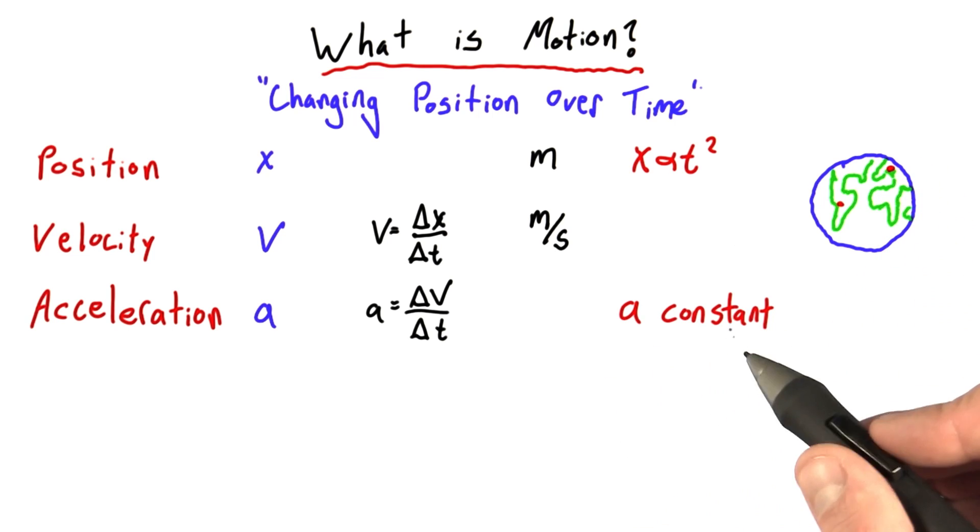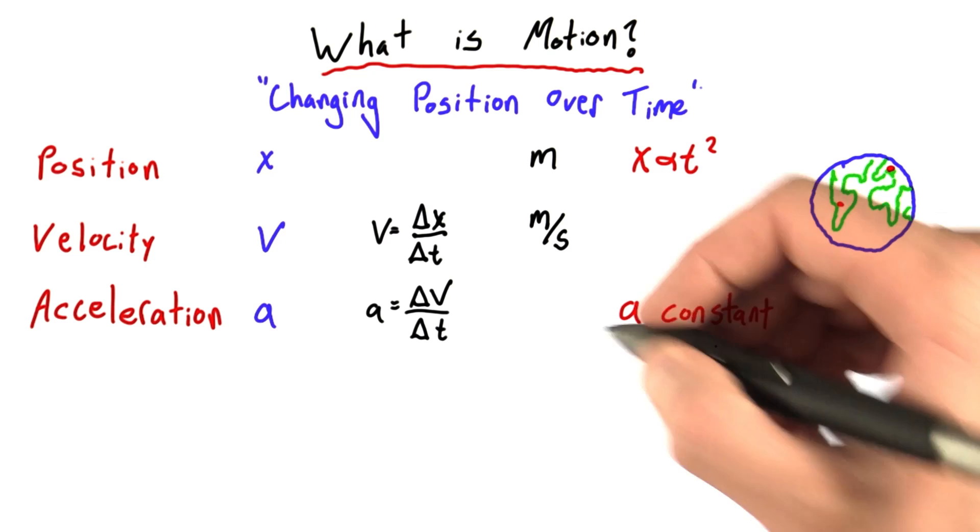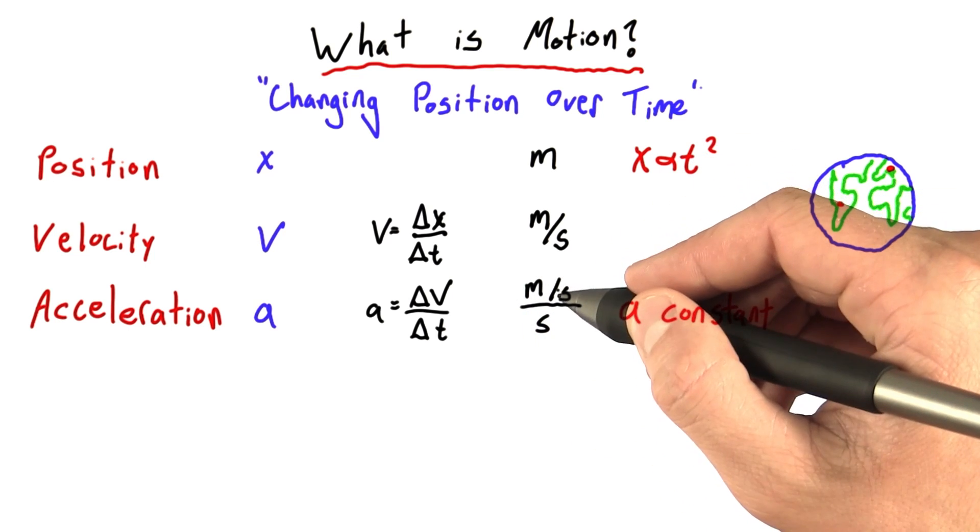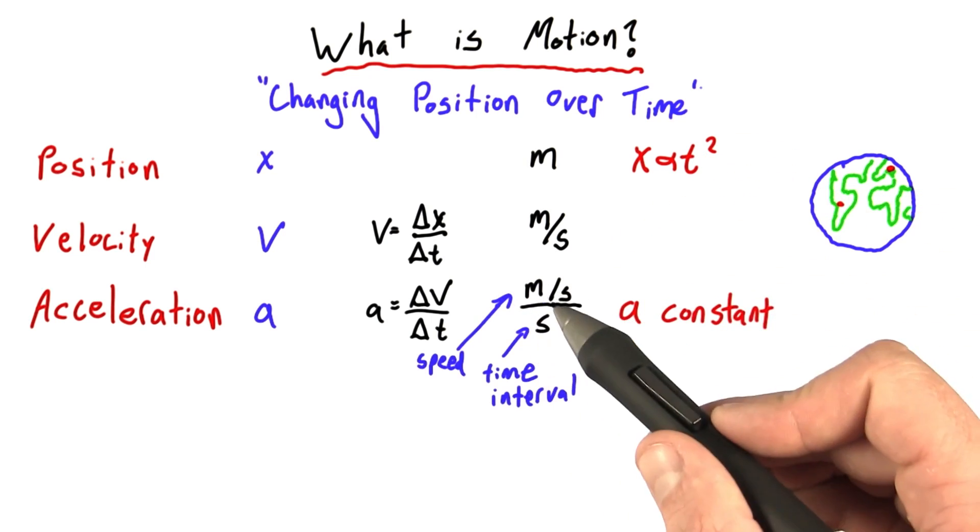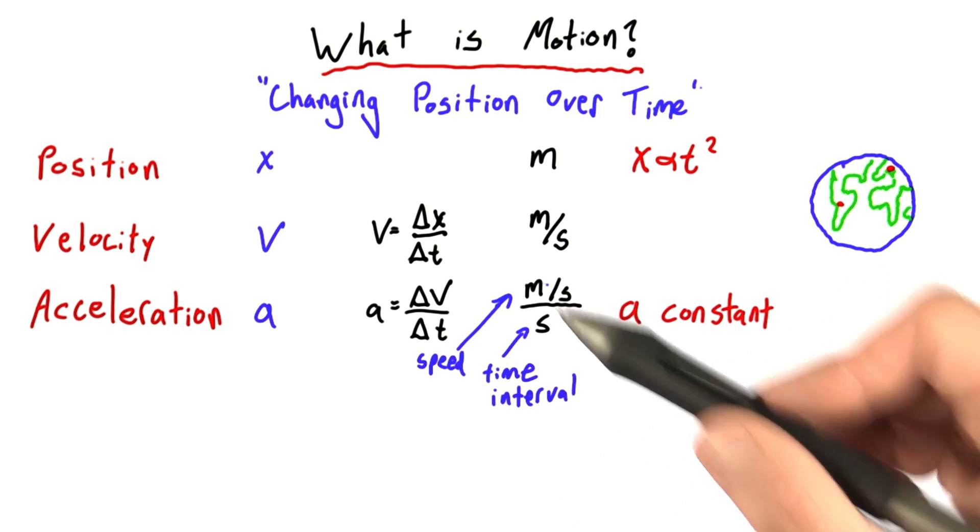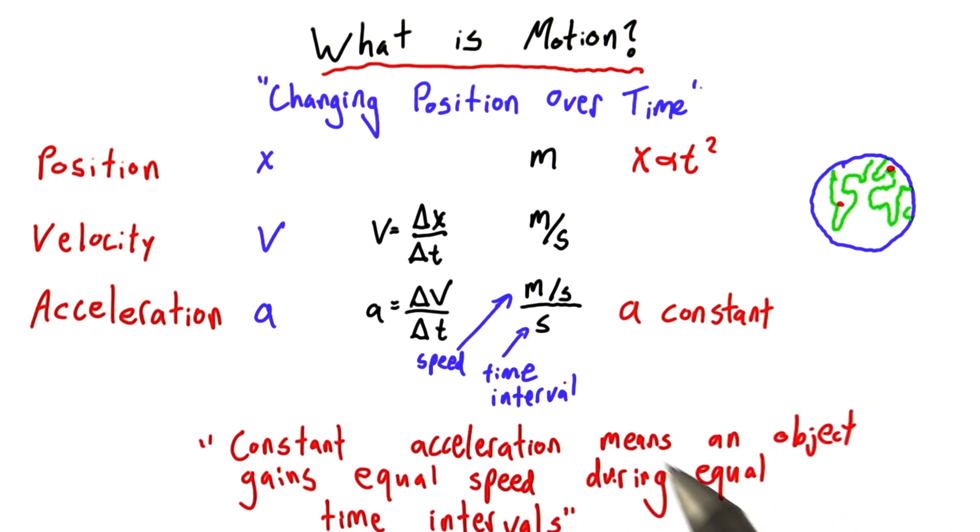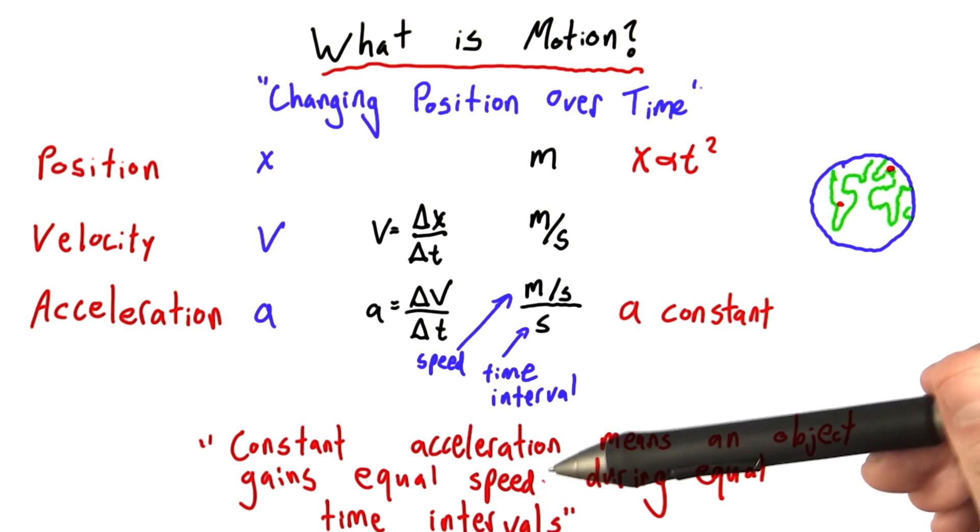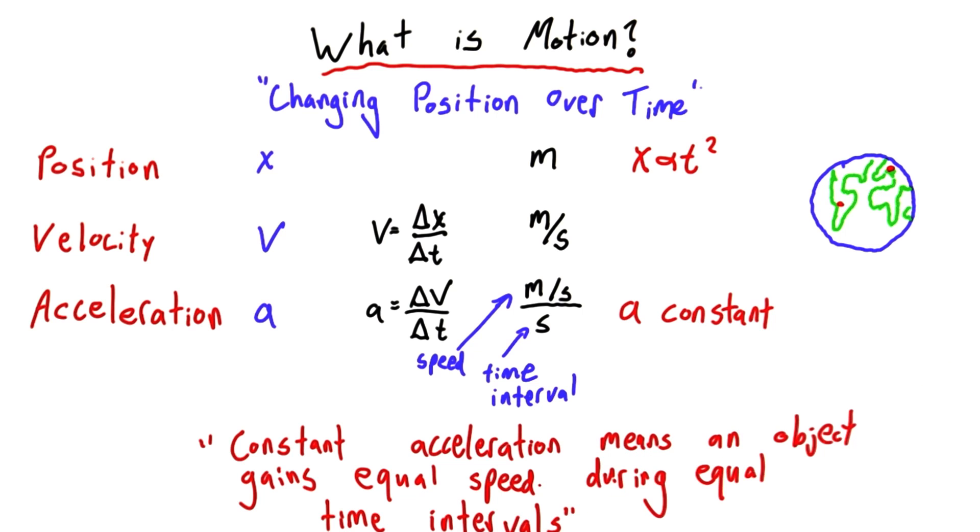Now to better understand this idea, let's talk about the units of acceleration a little bit more. Well the units are meters per second per second. So notice that these units include both a time interval, that's a second, and a speed, meters per second. This sort of hints at the definition for constant acceleration, which just means that an object gains equal speed during equal time intervals.